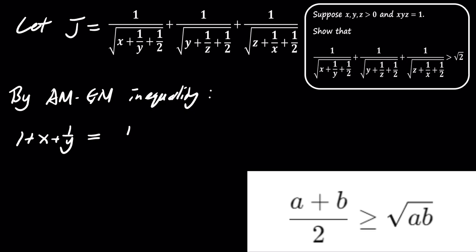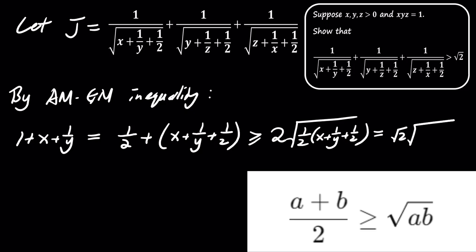Applying this inequality to the terms 1 plus x plus 1 over y, we get the following: 1 plus x plus 1 over y is greater than or equal to the square root of 2 times the square root of x plus 1 over y plus 1 half.